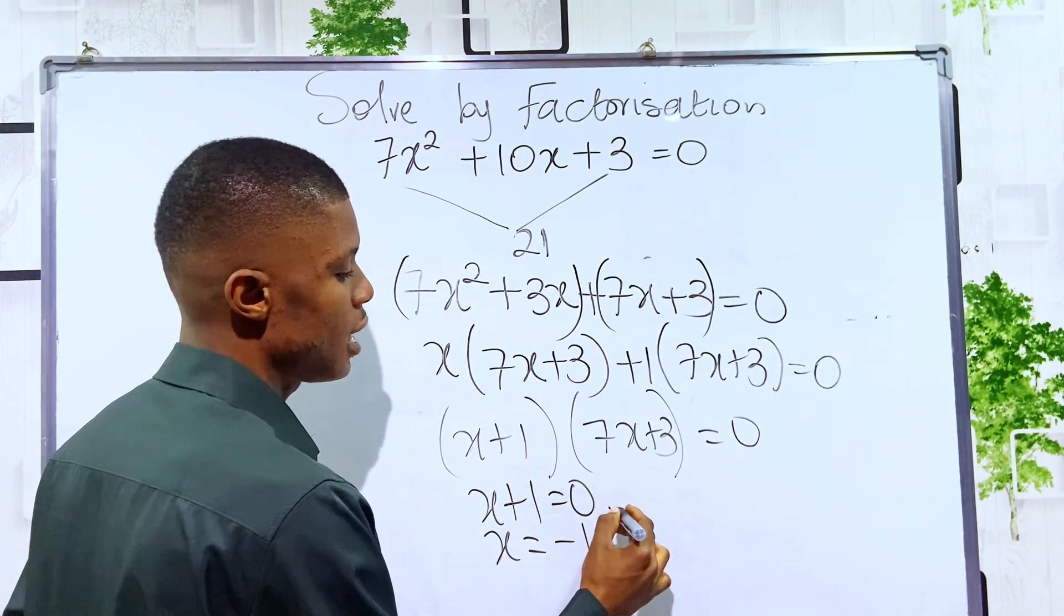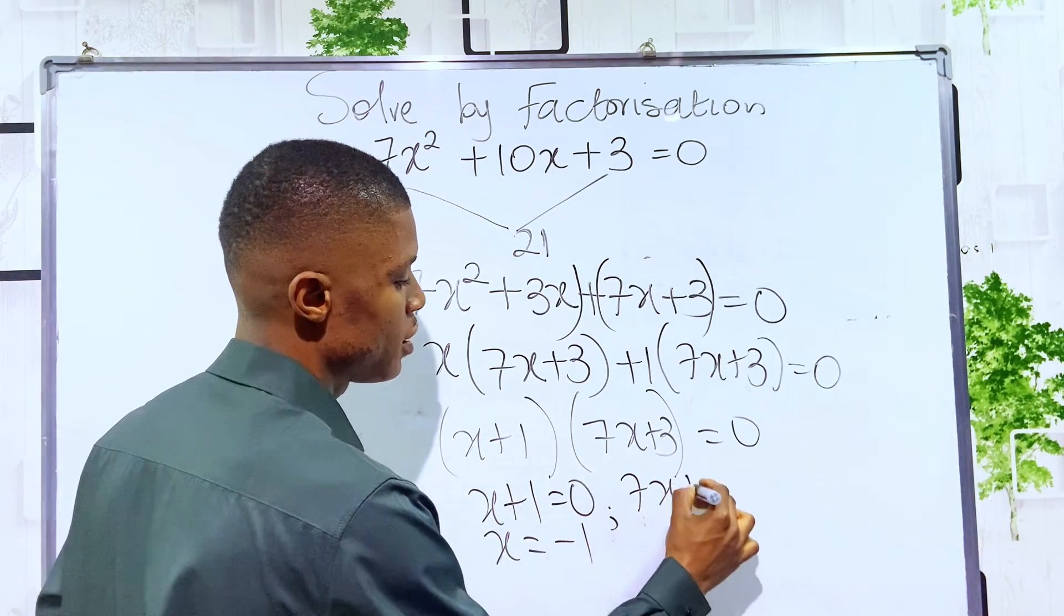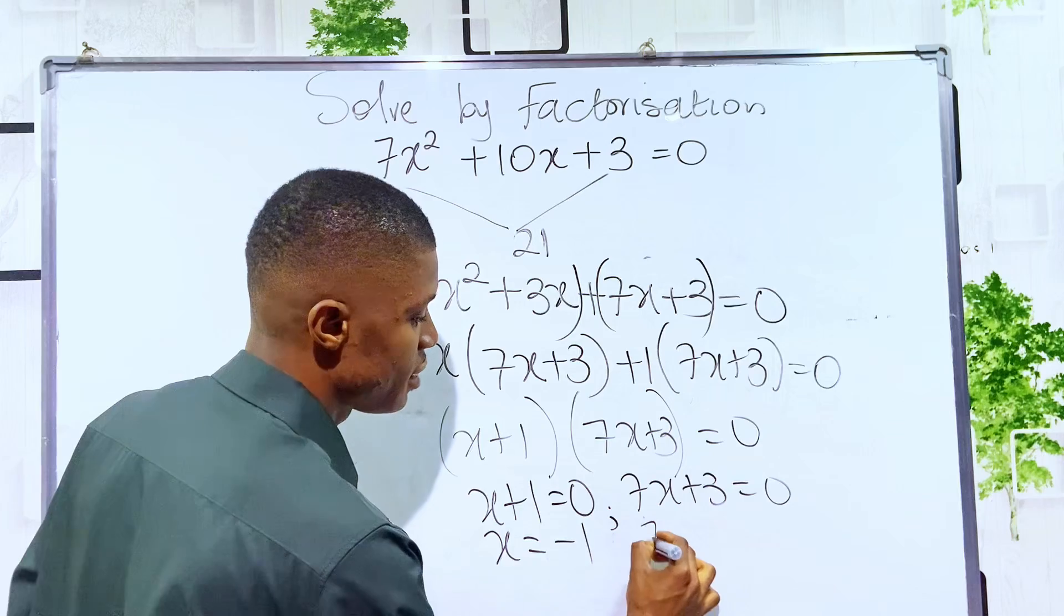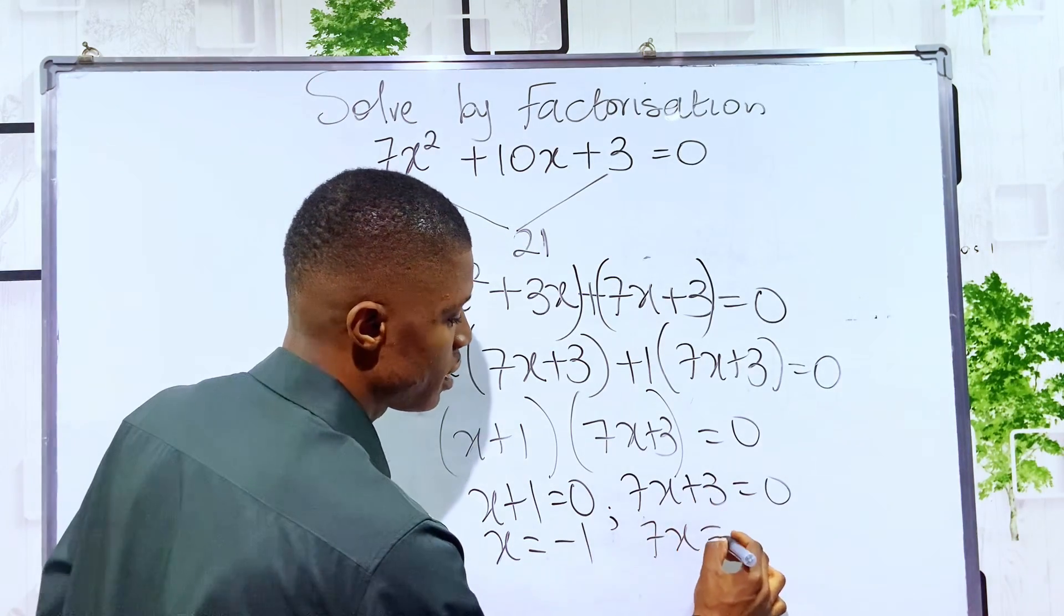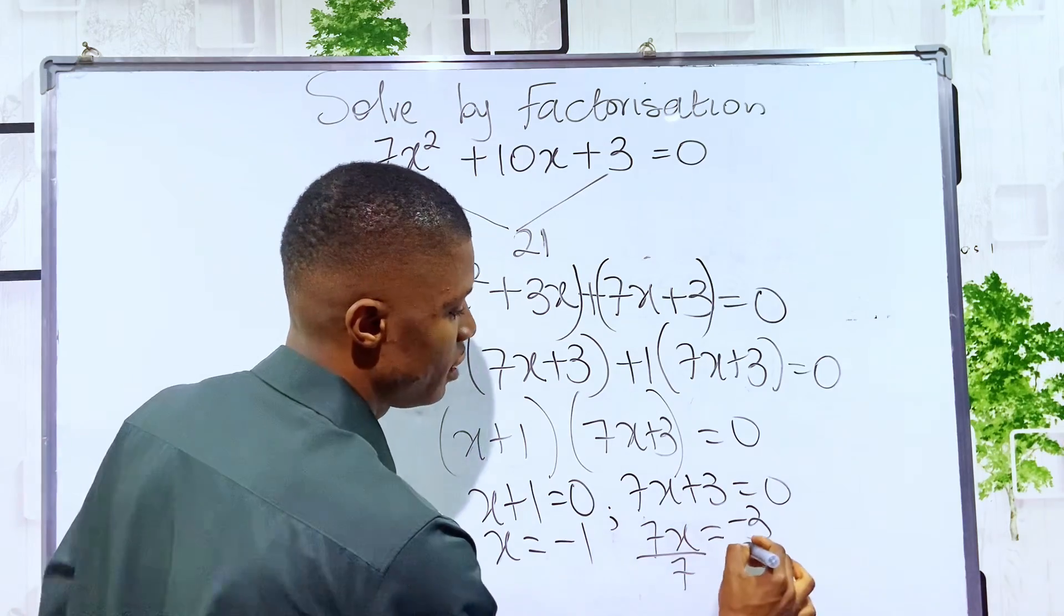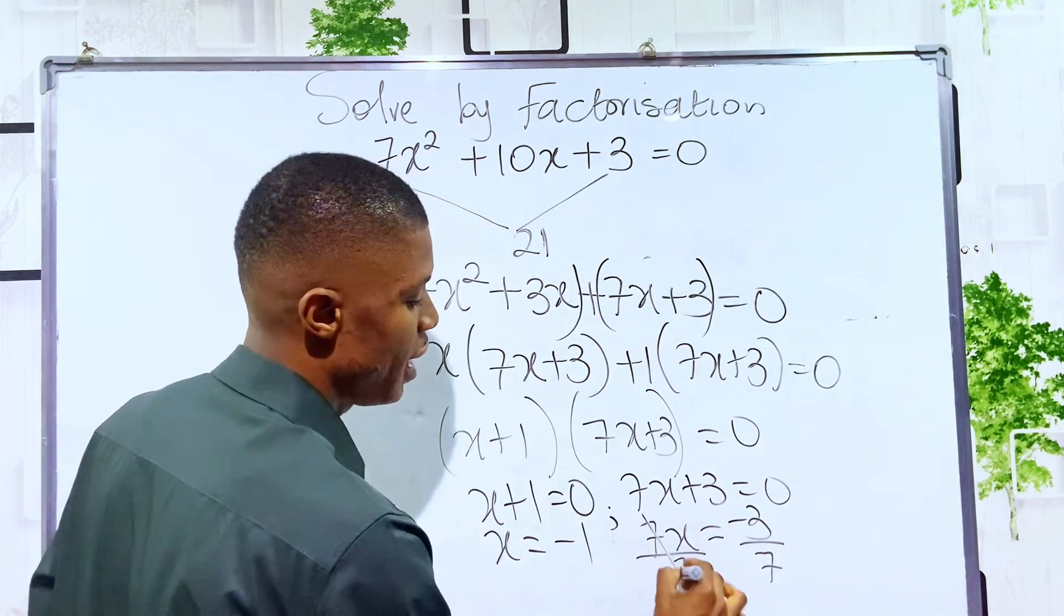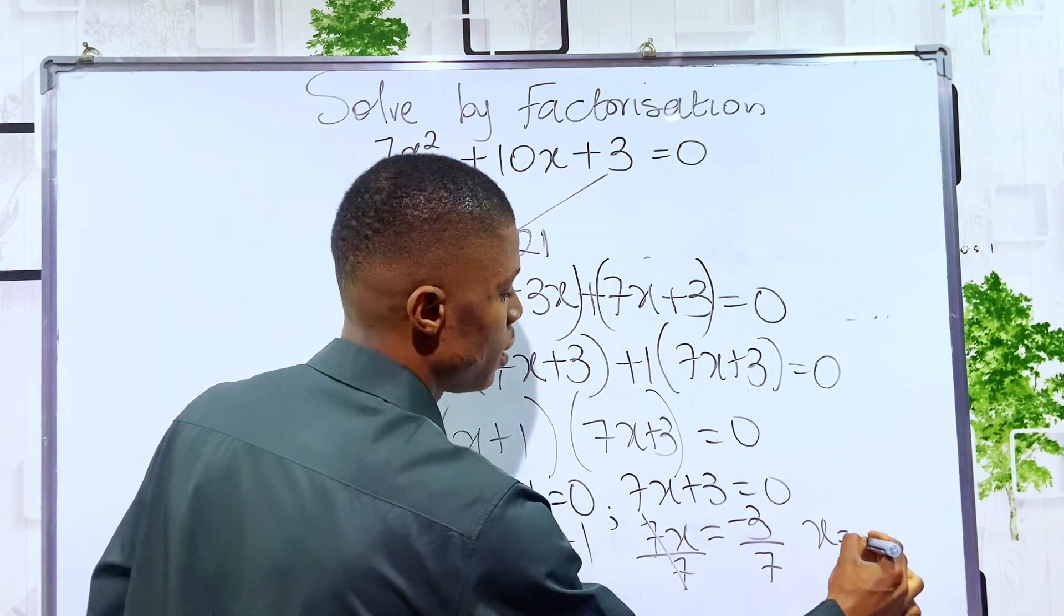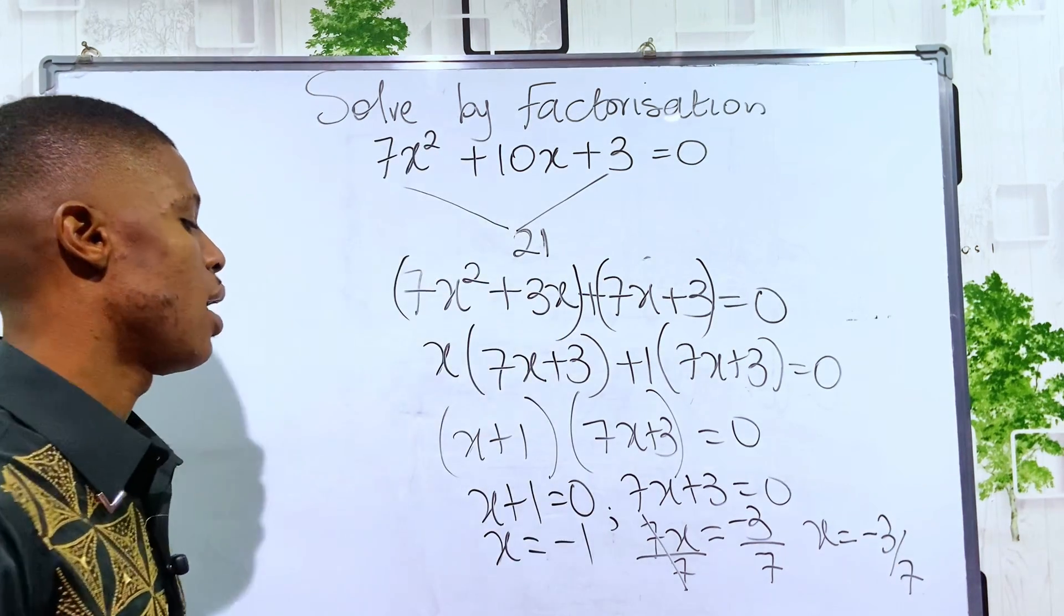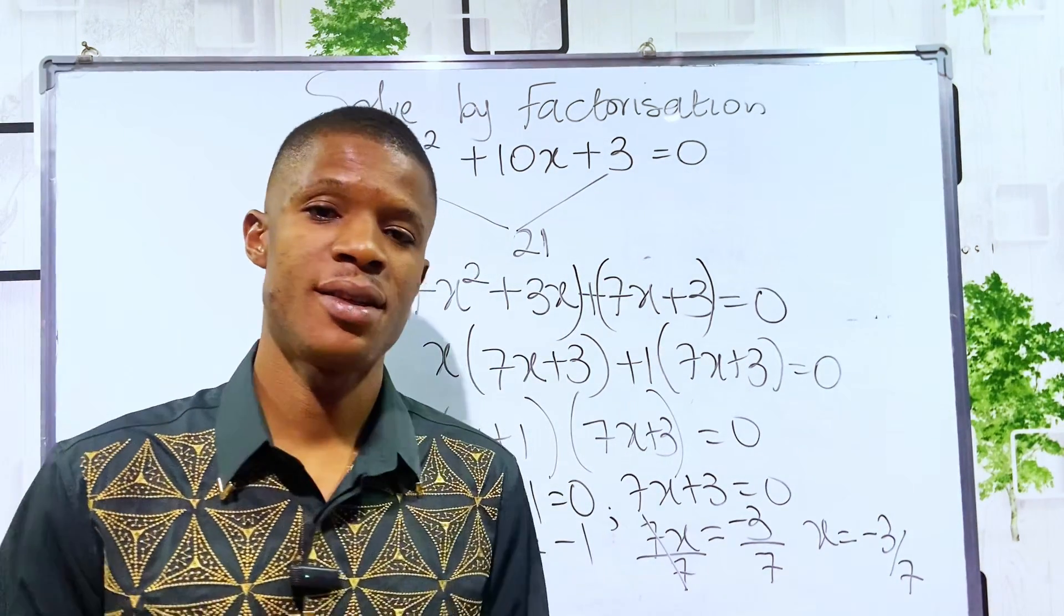Then for the second one, 7x plus 3 equals 0. That means 7x equals negative 3. Divide by 7, and x is negative 3 over 7. So the two solutions are negative 1 and negative 3 over 7.